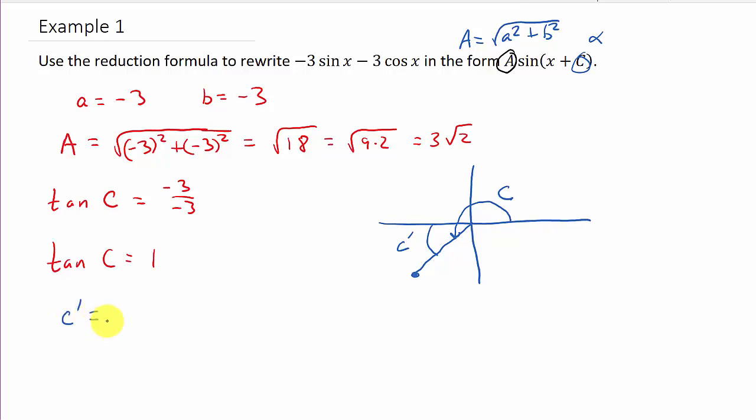All right. So, let's get the reference angle. So, c prime, our reference angle. Well, the inverse tangent of positive one is 45 degrees. So, we know this is our reference angle. And so, from that, I can go ahead and find c. So, I get c is equal to, well, that's 180, and then I got to add 45. So, that's 180 plus 45, which is 225. So, there's c.